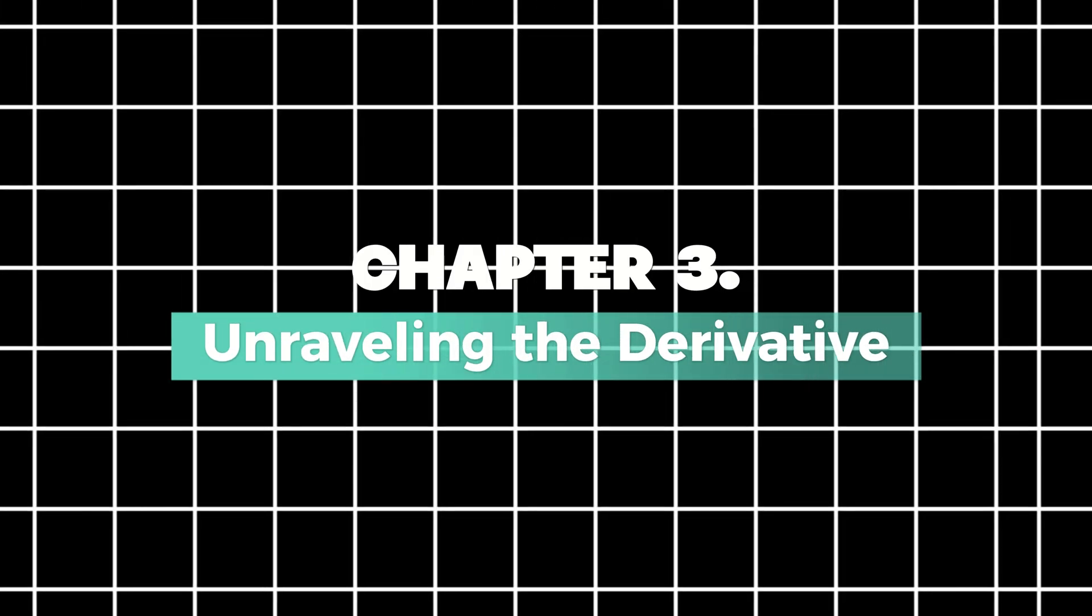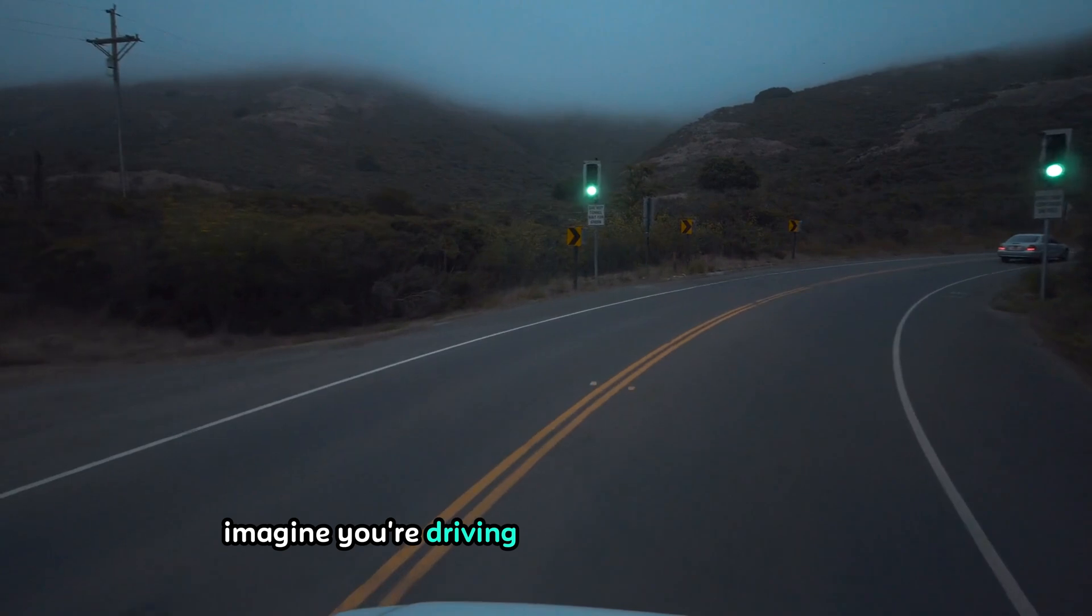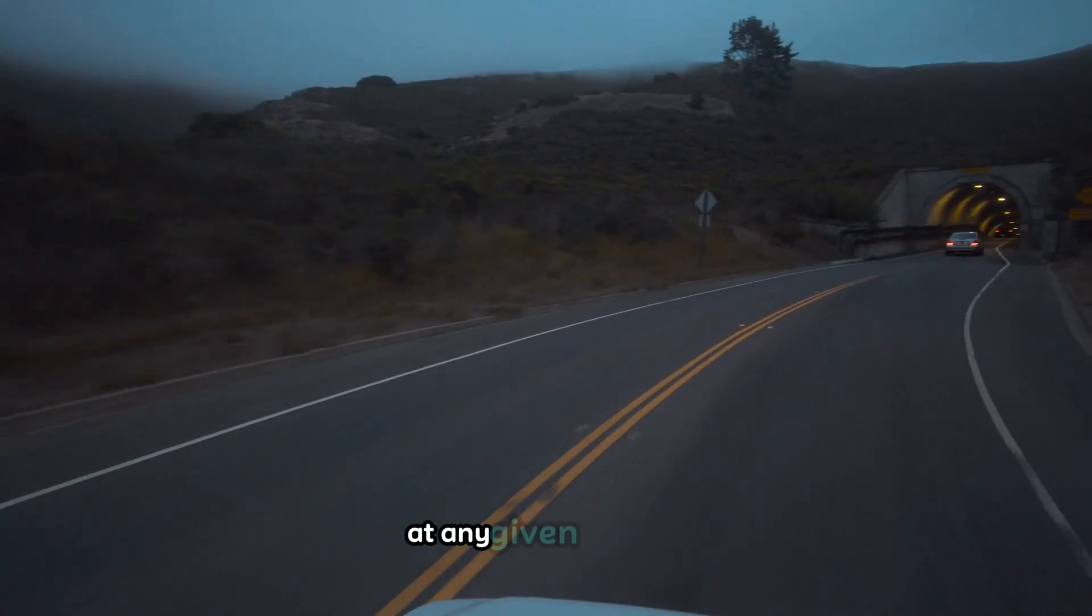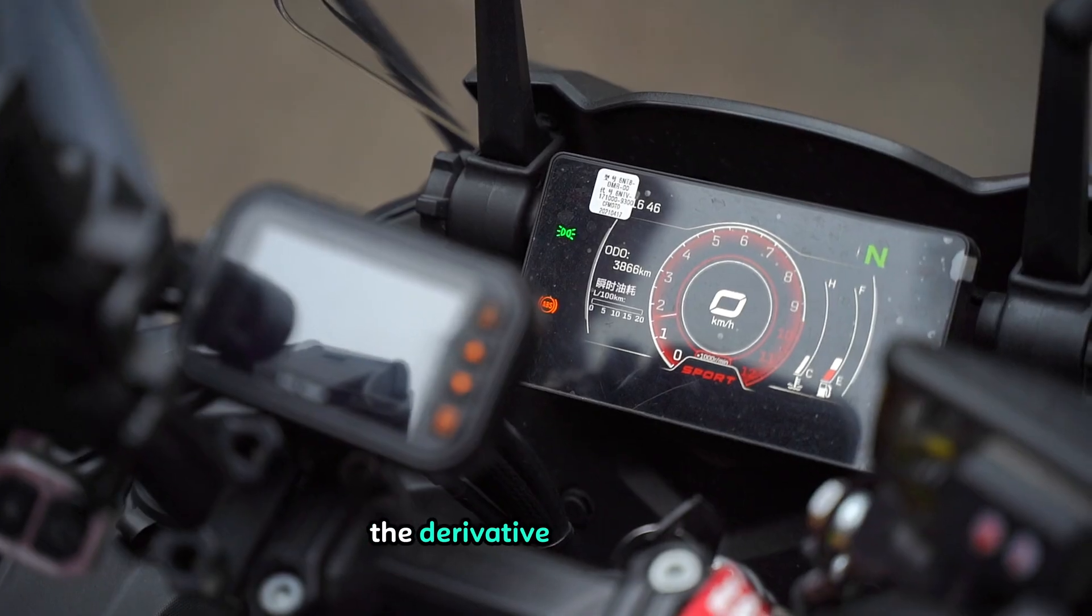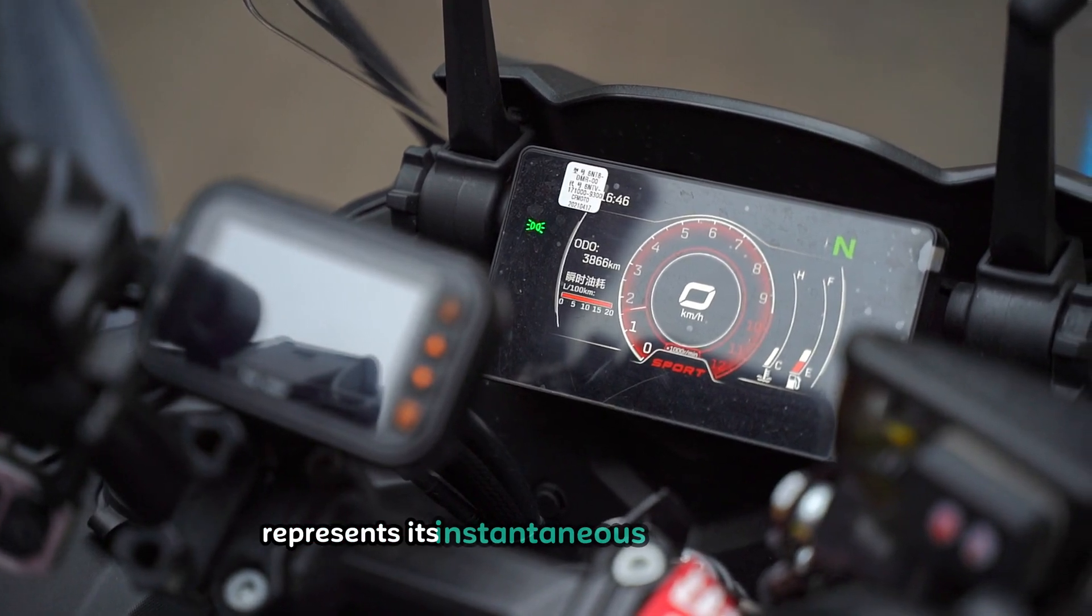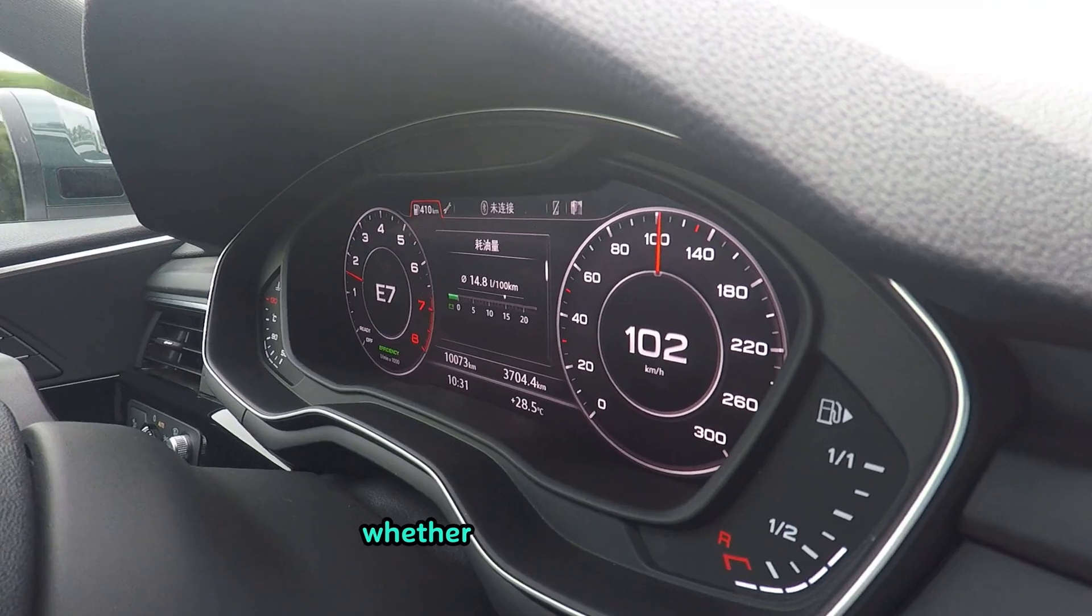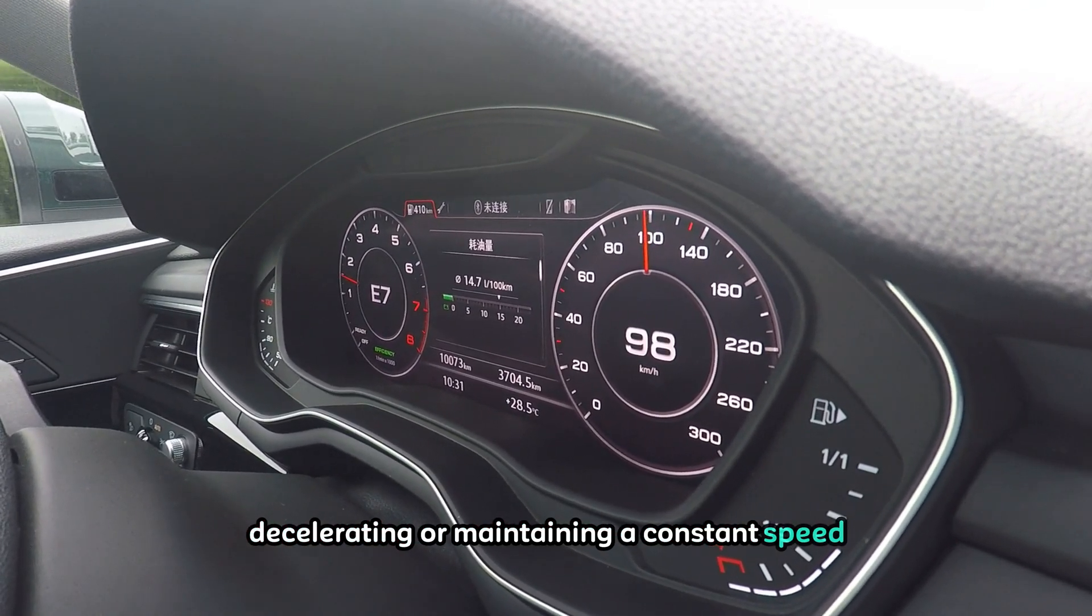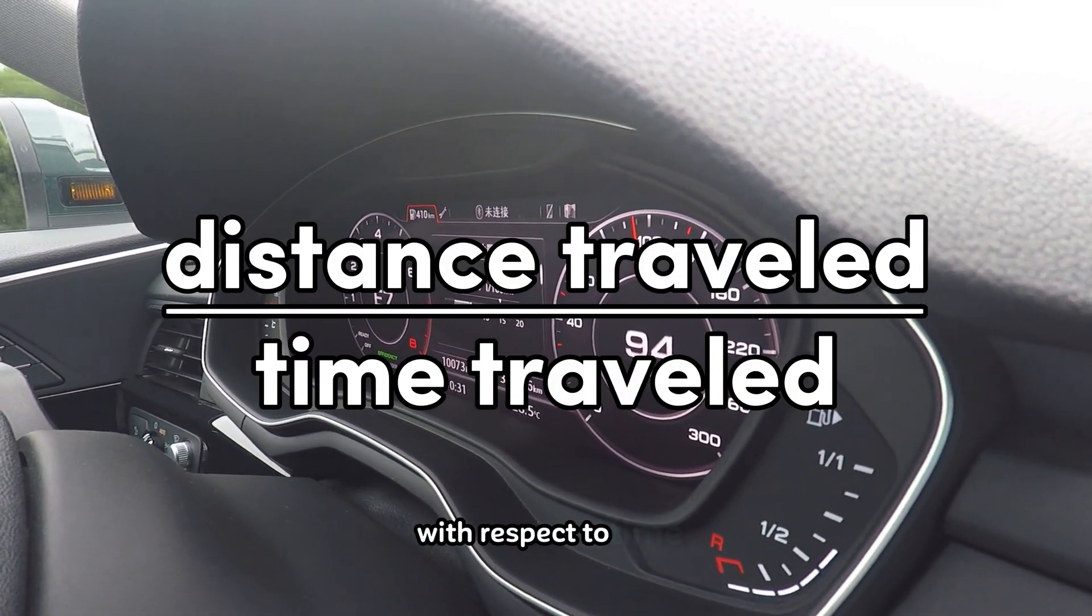Chapter 3. Unraveling the Derivative. Imagine you're driving a car along a winding road and you want to know how fast you're going at any given moment. This is where the derivative comes into play. The derivative of a function represents its instantaneous rate of change akin to the speedometer in your car. Whether you're accelerating, decelerating, or maintaining a constant speed, the derivative tells you how quickly your position is changing with respect to time.